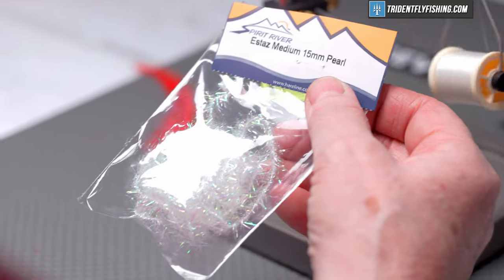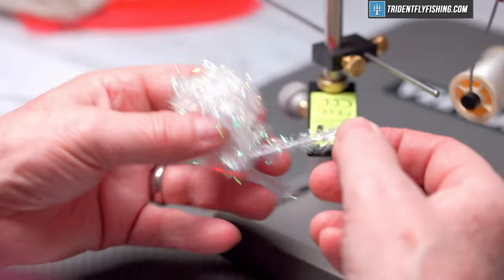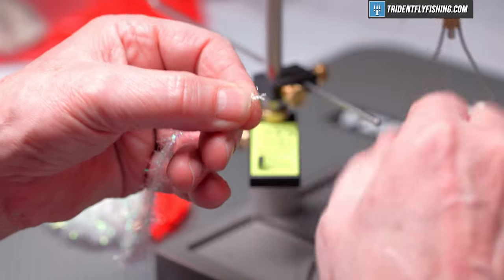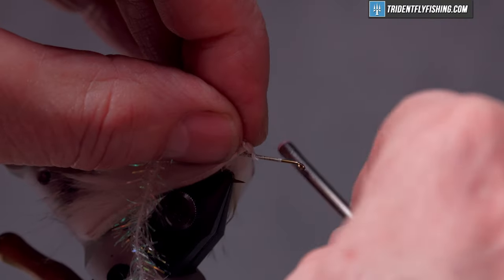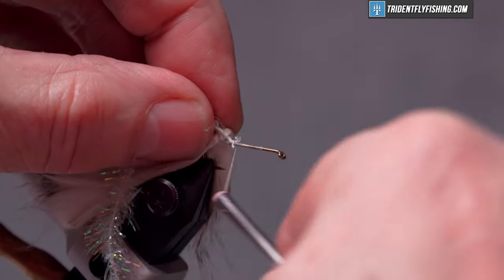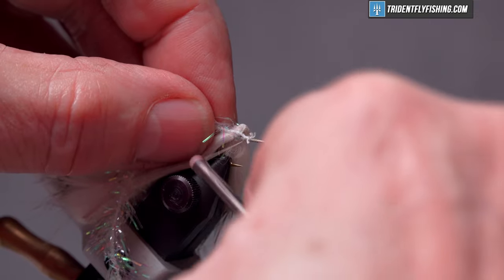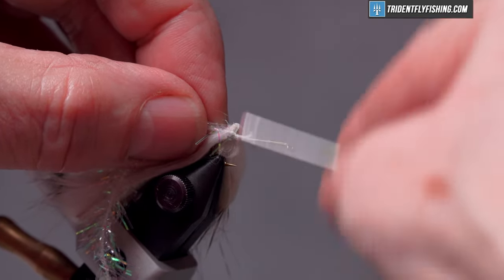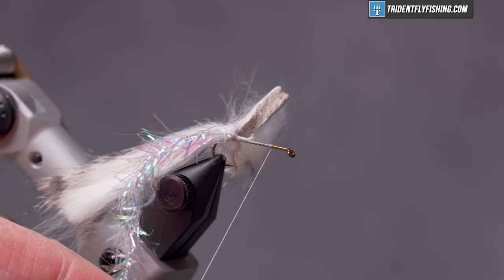Now for the body of the fly we're going to use some Spirit River Estes Medium in Pearl and we'll prepare that by pulling some of the material away from the core. We'll tie this in right up against our zonker strip and then wrap forward to our initial start point.